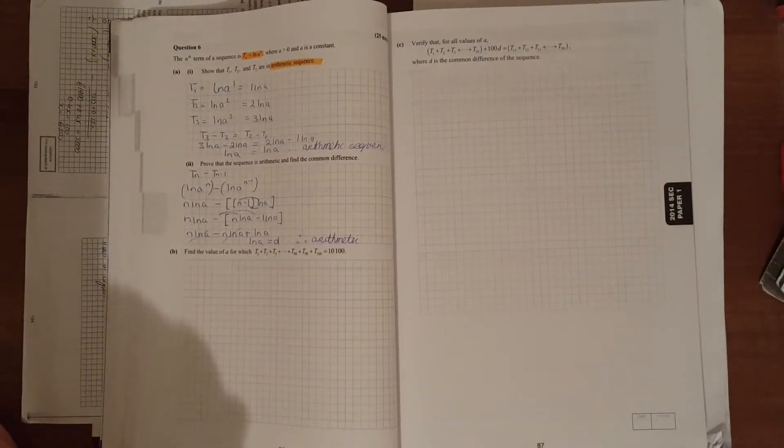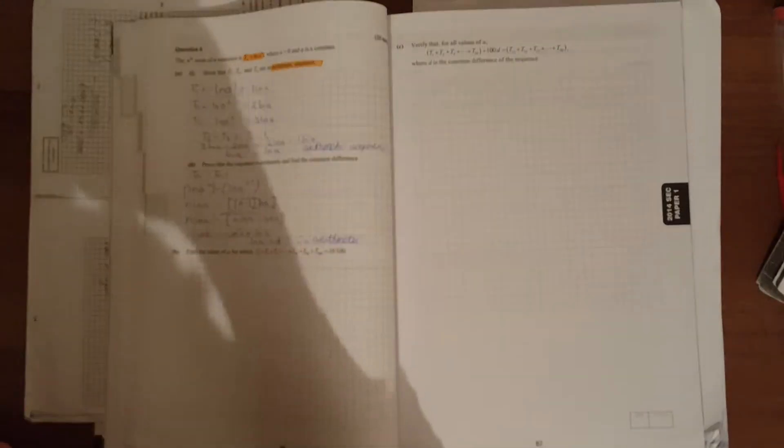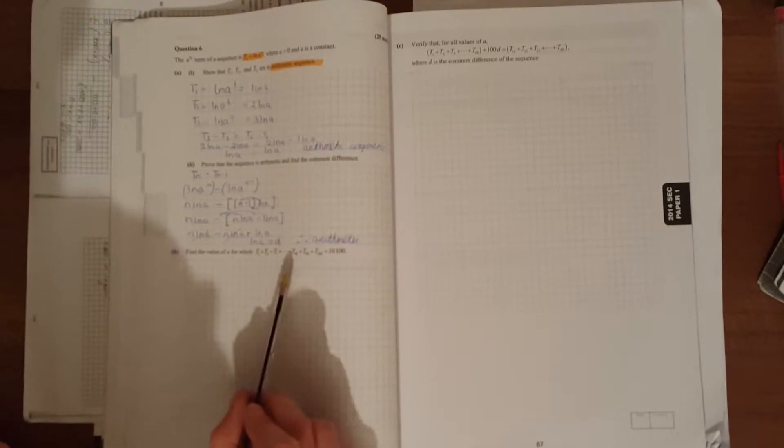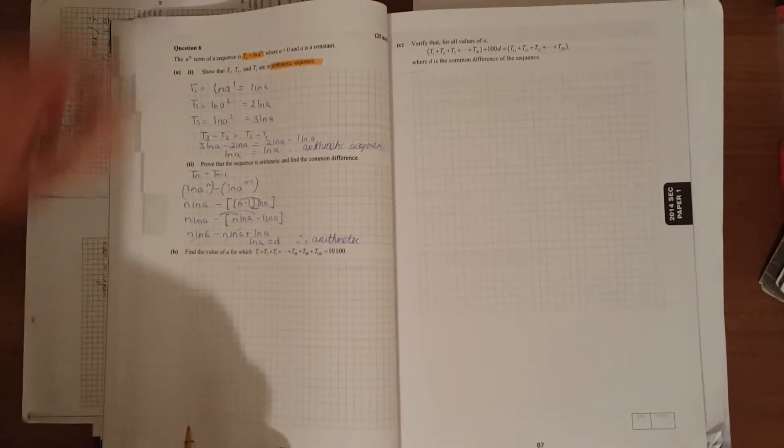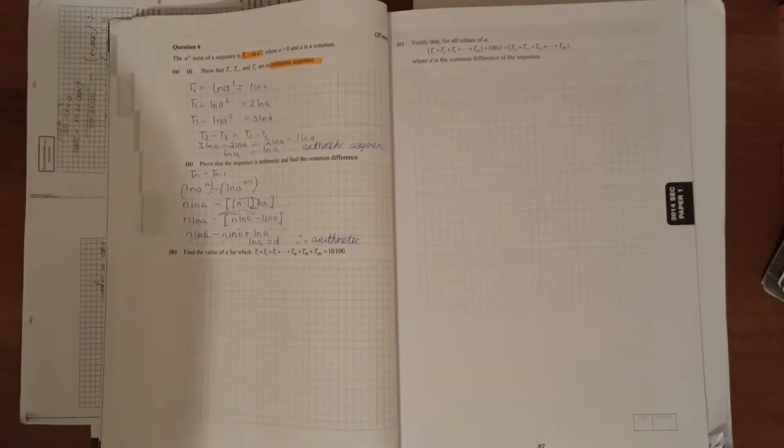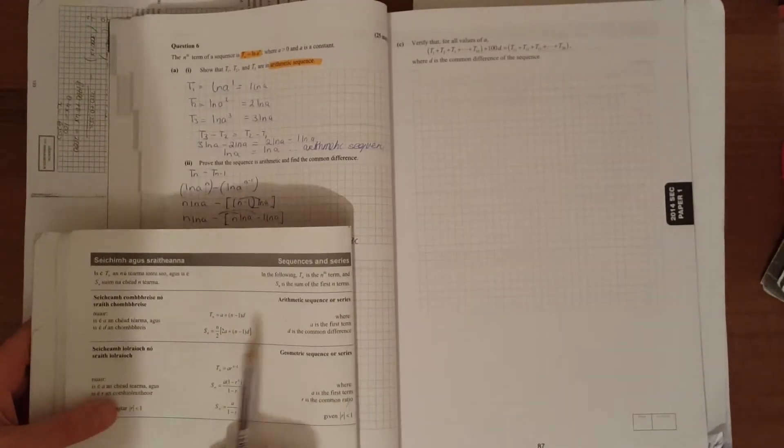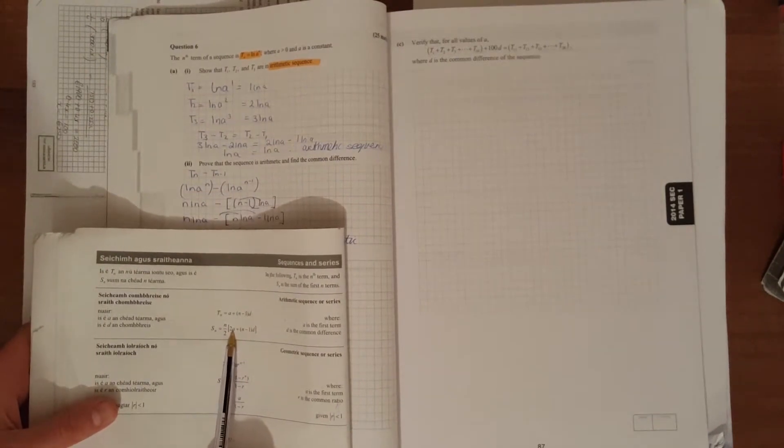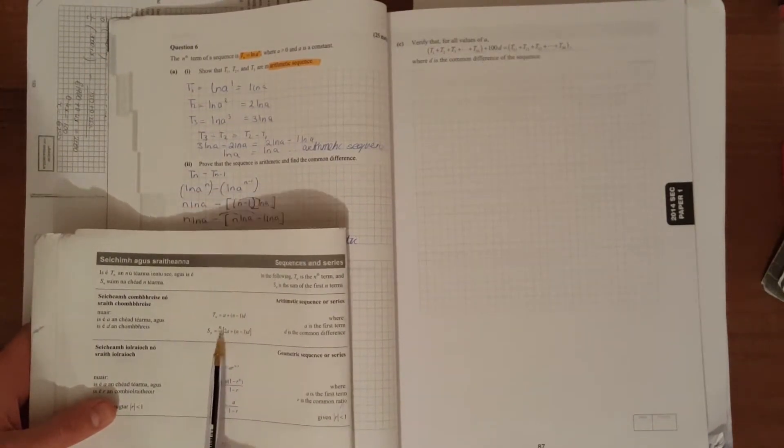Find the values for a for which t1 plus t2 plus t3. Once we see a plus in here, we now know we've gone into a series, so it's a linear series or arithmetic series, so we're using this formula. Once we see a plus, you know it's a series.